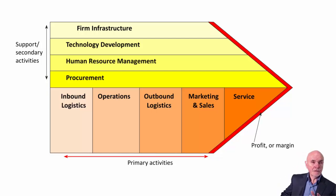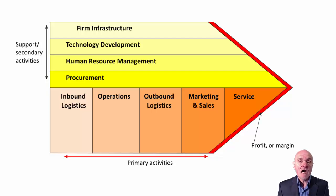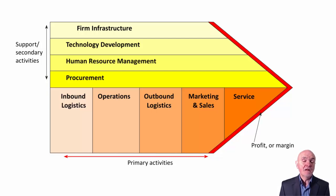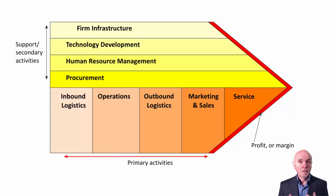Then you have operations, which is basically production. You have outbound logistics — how you're going to get finished goods to your customers. There is marketing and sales — how you're going to find your customers and tell them about your products. And service is anything which takes place after the sale: training, installation, maintenance, supplying consumables. A lot of money can be made out of the service element.